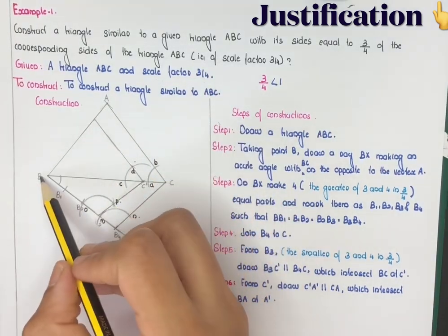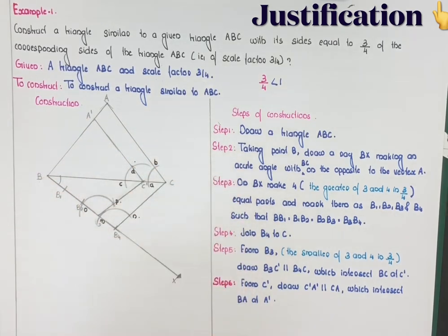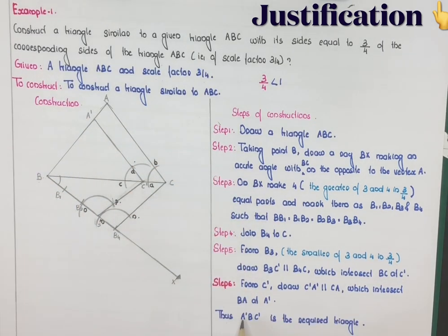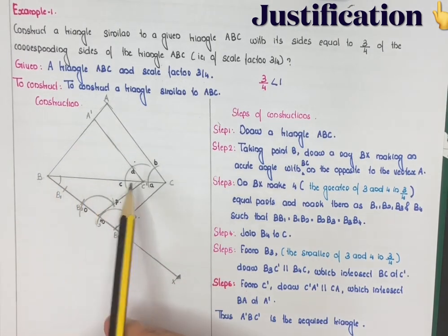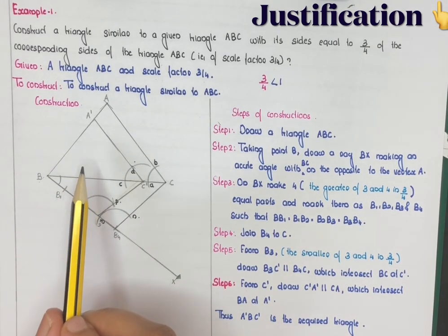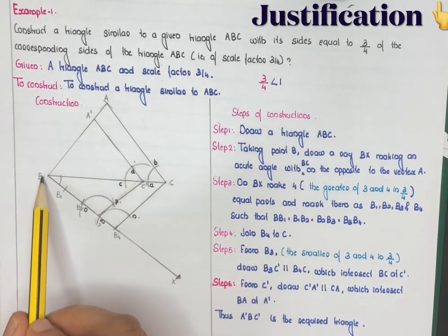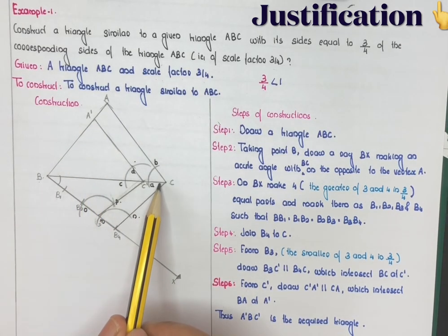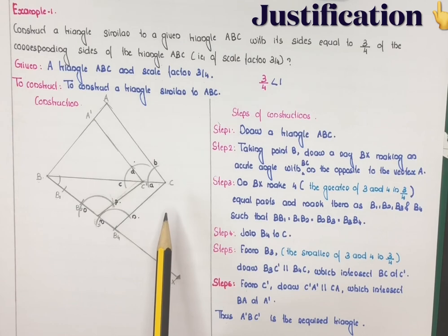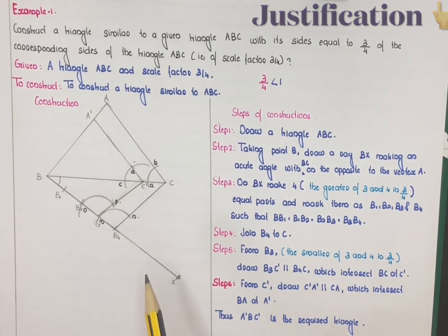Triangle A'BC' is the required triangle, with its sides equal to 3/4 of the corresponding sides of triangle ABC. The justification for this construction is explained in a separate video — the link is available in the description via the i-button.